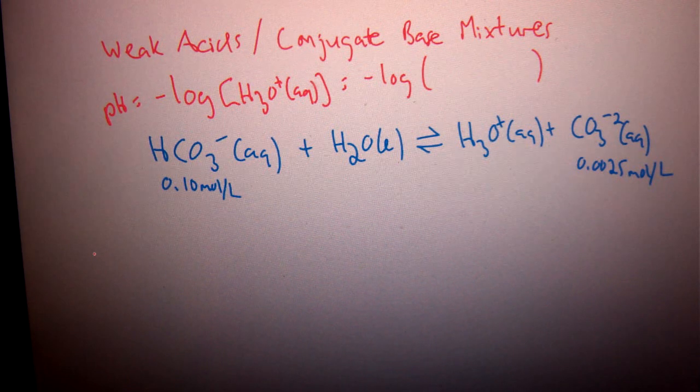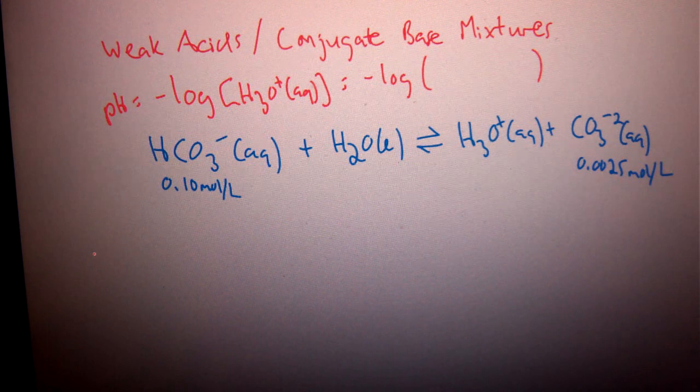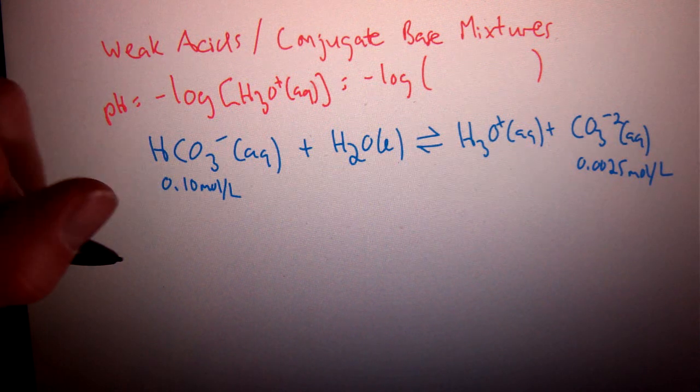We've already identified before, when we're trying to find pHs of weak acids or weak bases, we should, or most often, we'll be able to use our approximation rule, which means we can go right into our shortcut.